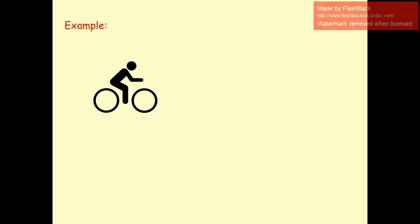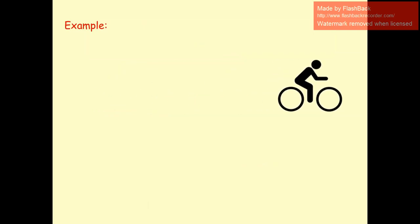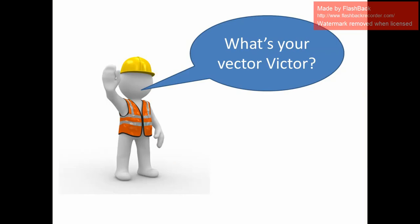Here a cyclist is moving to the right. We can say this cyclist is moving at plus 10 meters per second to the right. The plus sign gives the direction — to the right. If the velocity is given a negative sign, that means the direction is to the left.